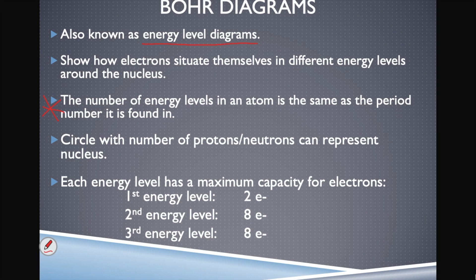The first energy level can hold a maximum of two electrons. Any more than that must go into other energy levels. The second and third energy levels have a maximum capacity of eight electrons each. We fill from the inside out — we must have a full first energy level before moving to the second, and a full second before moving to the third.